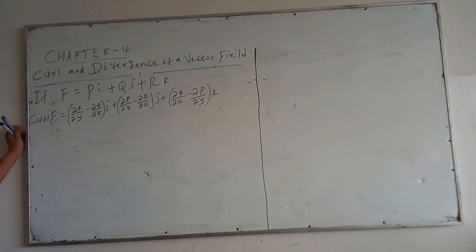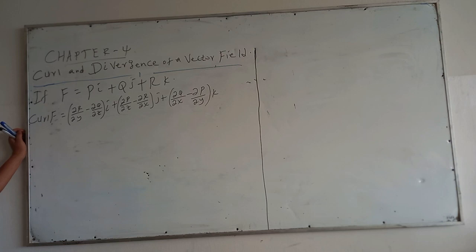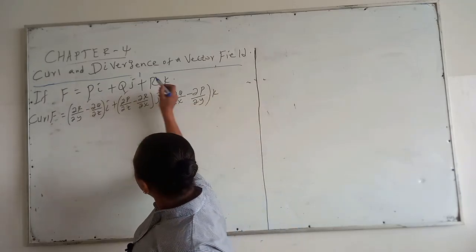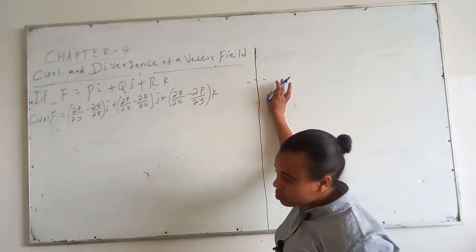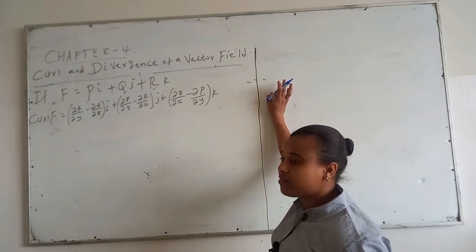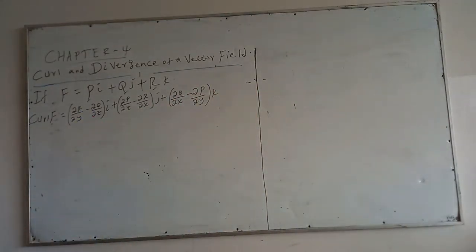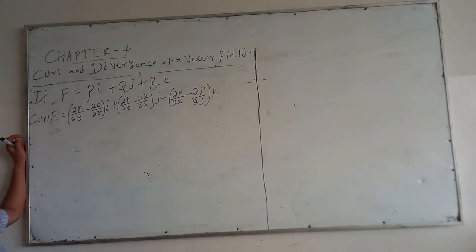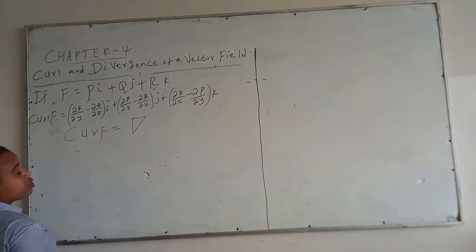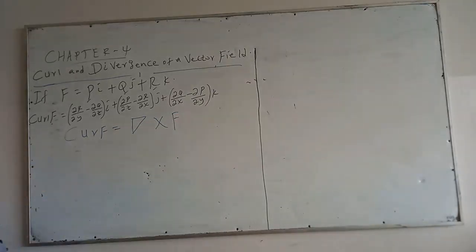If F is a vector field, and its components p, q, and r have existing partial derivatives, then the curl of F is defined as: partial of r with y minus partial of q with z in i, plus partial of p with z minus partial of r with x in j, plus partial of q with x minus partial of p with y in k. The curl can also be expressed as the del operator cross product with F.